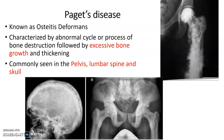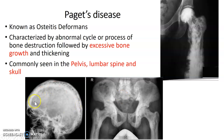Paget's disease, also known as osteitis deformans — circle that and underline it, because this almost always appears as a question on boards. Paget's involves excessive bone growth and thickening, most commonly seen in the pelvis, lumbar spine, and skull. On imaging it kind of looks like cotton wool — fuzzy. You'll most often be given either a pelvis image or a spine image. Know this one.